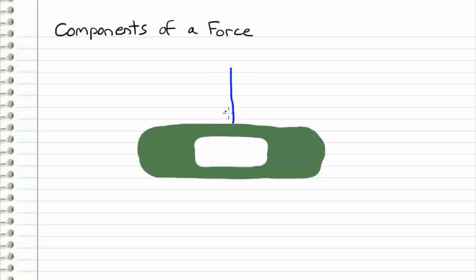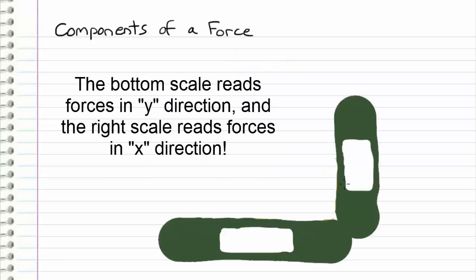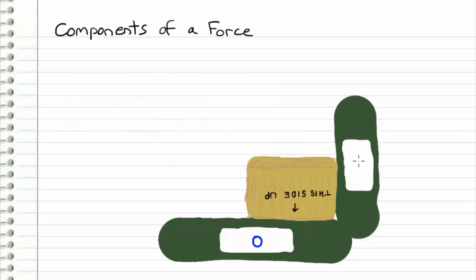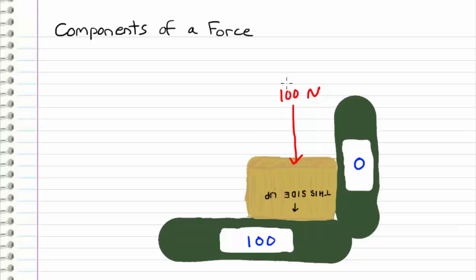So right here I have a scale. If I were to apply 100 newtons to this scale, it would read 100 newtons. Let's take two scales and arrange them — one horizontal (bottom) and one vertical (right) — and place a massless box on top. With no forces acting, both scales read zero. Now, if I push straight down onto the box with 100 newtons, the vertical scale on the right shows zero — because there's no component of the applied 100 newtons in the x direction toward that scale. The bottom scale shows the entire 100 newtons, and the right scale shows zero.